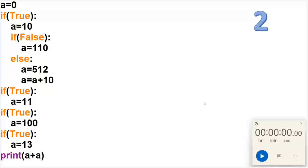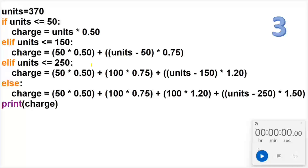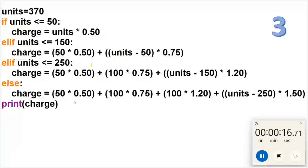We are done with the second question. Now let's go with the third question — time starts now. In this third question it is an electric bill problem, and the units given are 370. If it is 370, what will be the total charge? I have segregated it: if it is less than 50 units, the charge is multiplied by 0.50 — like that, different sectors I have divided.